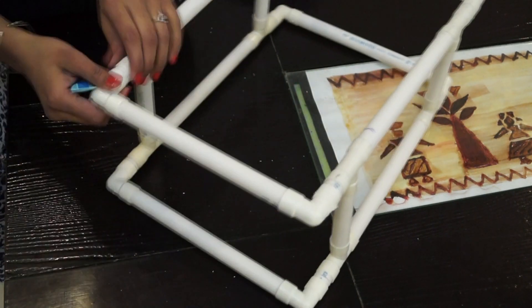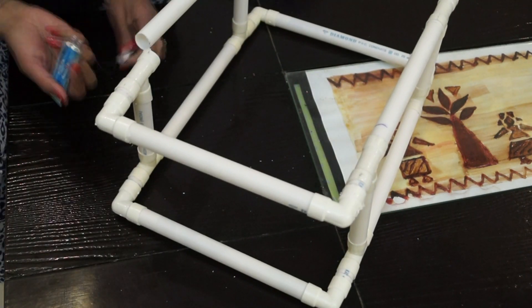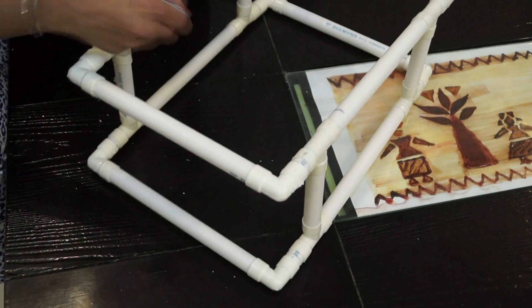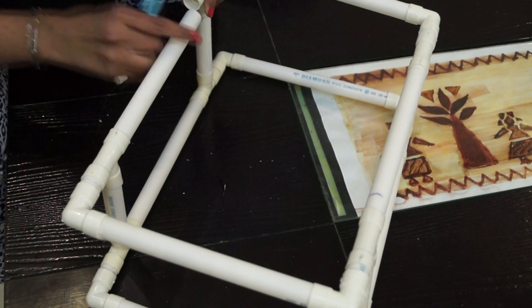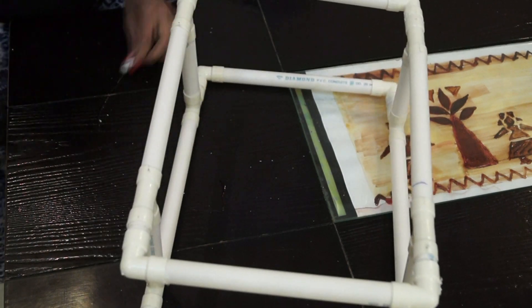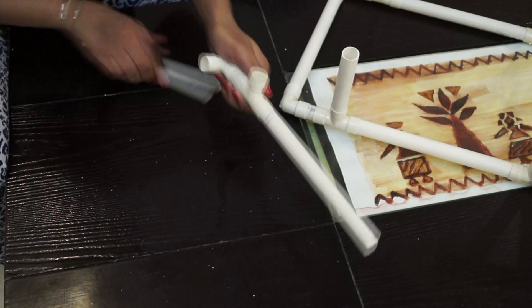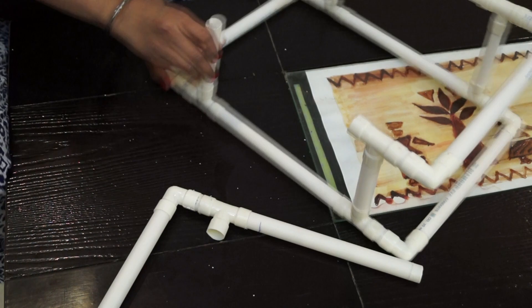So next I am going to take this adhesive. I will open the joints and I am putting this adhesive on the joints and I am going to join it. It will hardly take a minute or so and you are done with fixing all these joints together with the help of this adhesive.